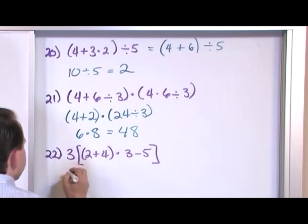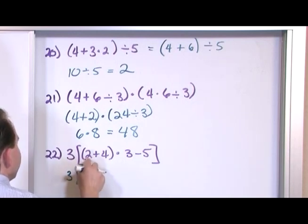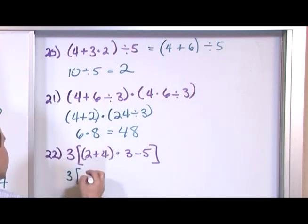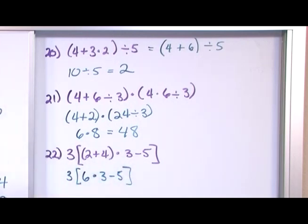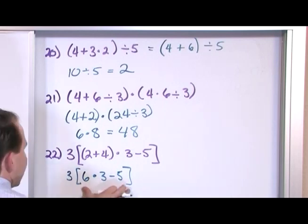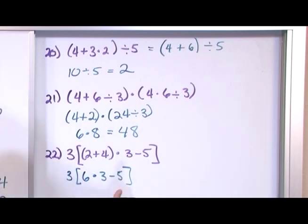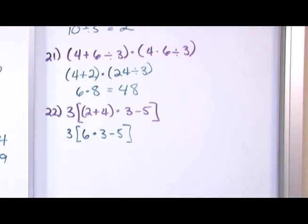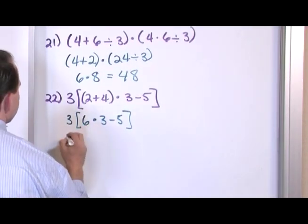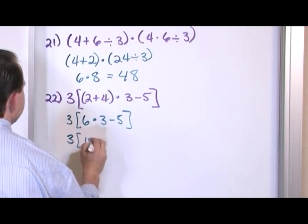So what I'll do is I'll say 3 bracket, and then 2 plus 4 is 6, so I'm going to put 6 times the 3 minus the 5 close bracket. All I did was evaluate the inside of the parentheses. Now I have a bracket. I have to work on this. Inside of here I've got multiplication and subtraction. Multiplication is going to come first before that subtraction, so 6 times 3 is 18.